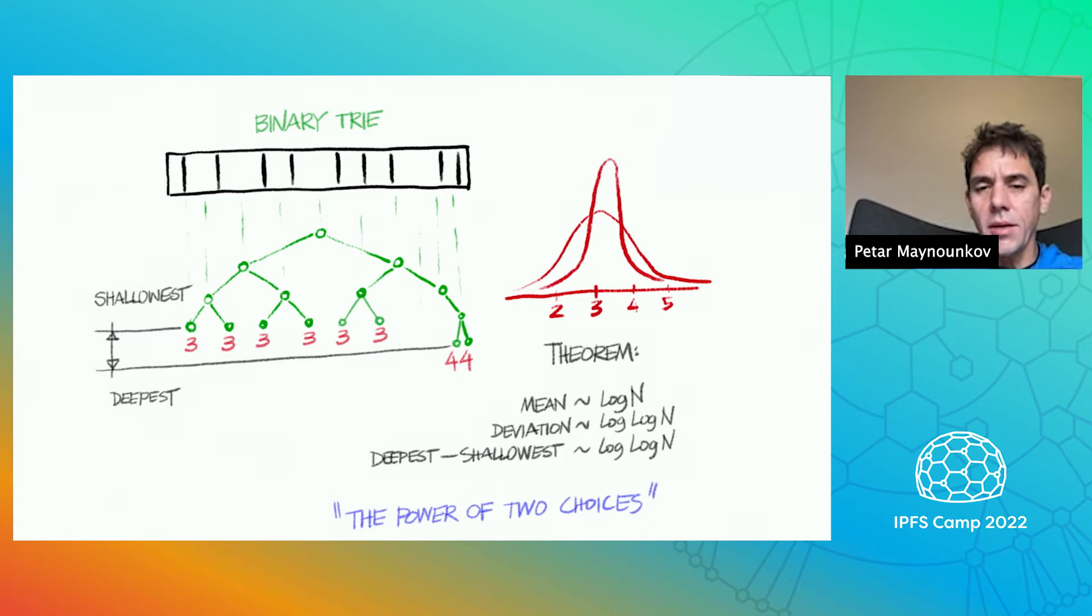Now, the actual formal statement of the theorem says that if you use the power of two choices algorithm, the mean of the binary tree would be now actually pretty much exactly log N, but the more interesting part is that the deviation from the mean is log of log of N. So previously it was log of N. Now it's log of log of N. So this is exponentially smaller. Log of log of N is usually such a small number that you can think of it as just being equal to one or two, regardless of how many peer IDs your system has. So in practice, what this means is that you expect to see a completely balanced tree, which very infrequently might have nodes that are either one deeper than the average depth or maybe one shallower than the average depth. And so this is called the power of two choices.